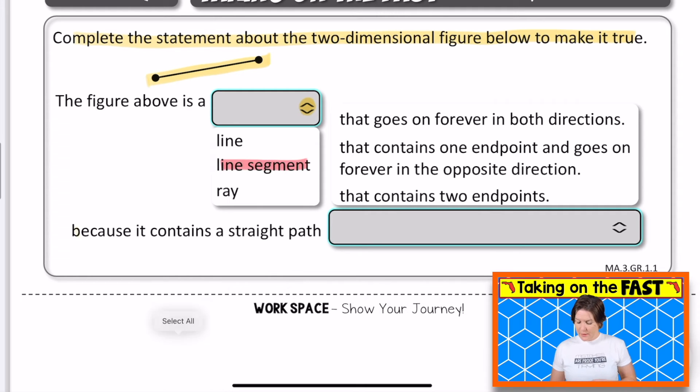It's a line segment because it contains a straight path. We click this and it populates this right here. I know it's kind of hard to see the border, but it pops up that drop down or drop up menu where we have to pick what we need to select to make it true. So because it contains a straight path that goes on forever in both directions. No, it doesn't go on forever in both directions.